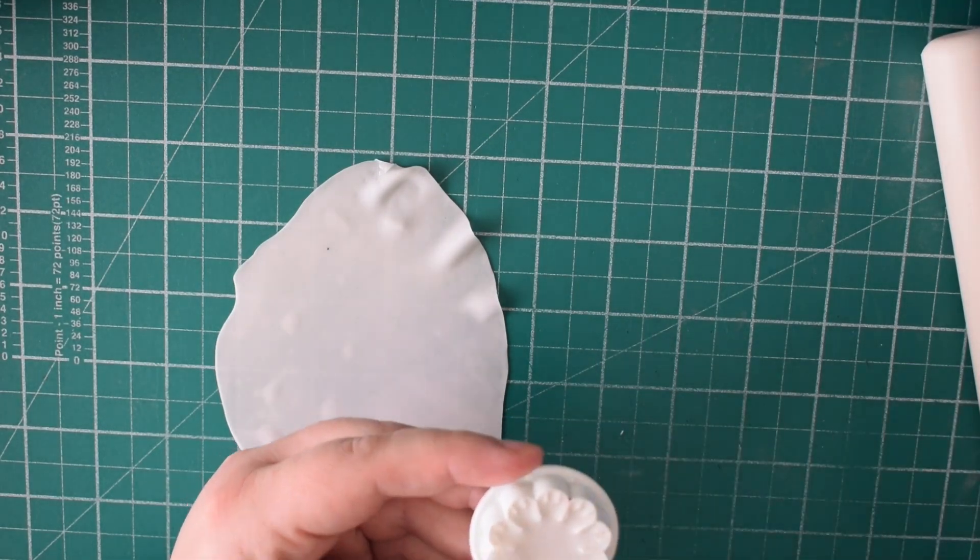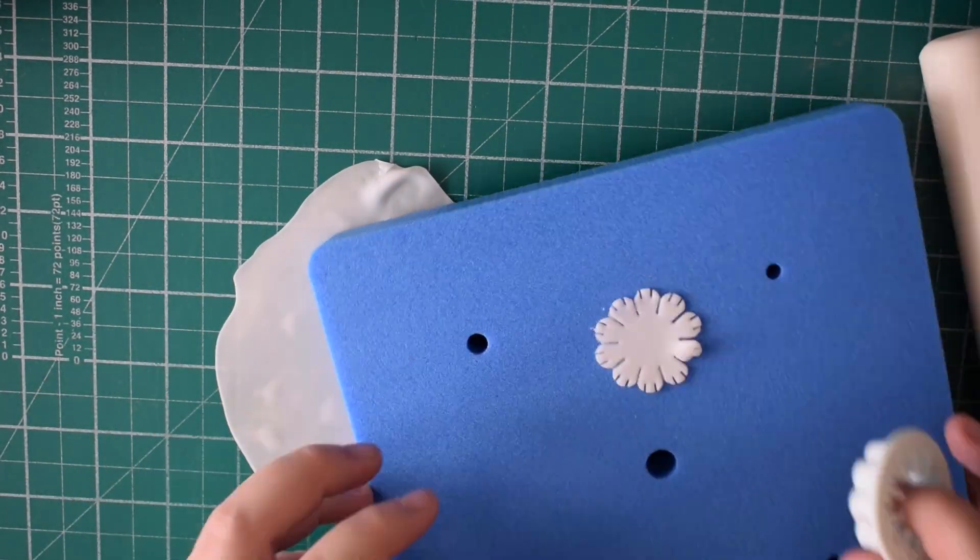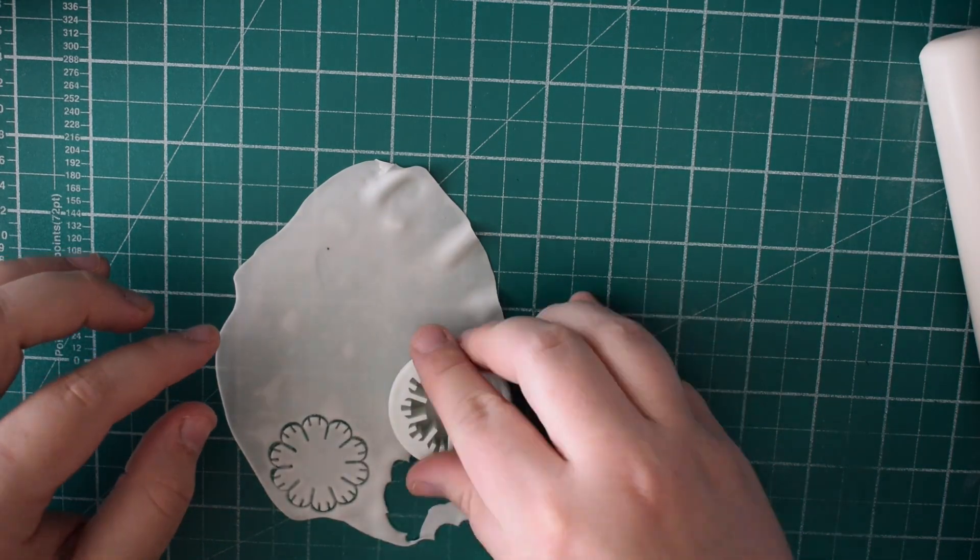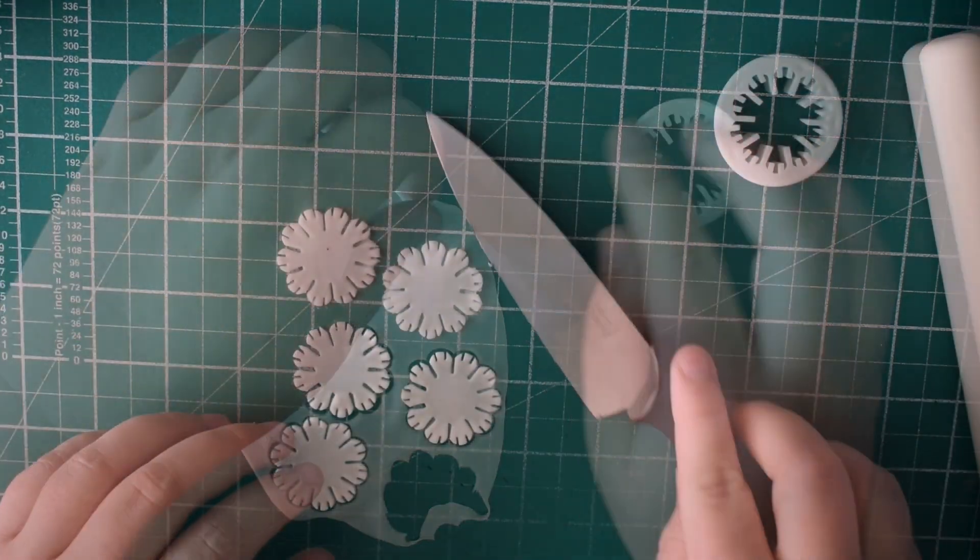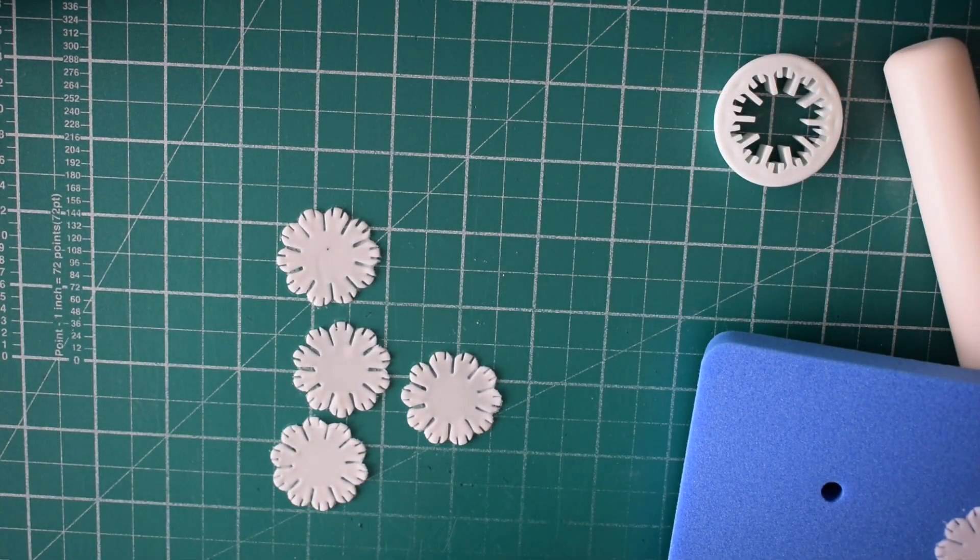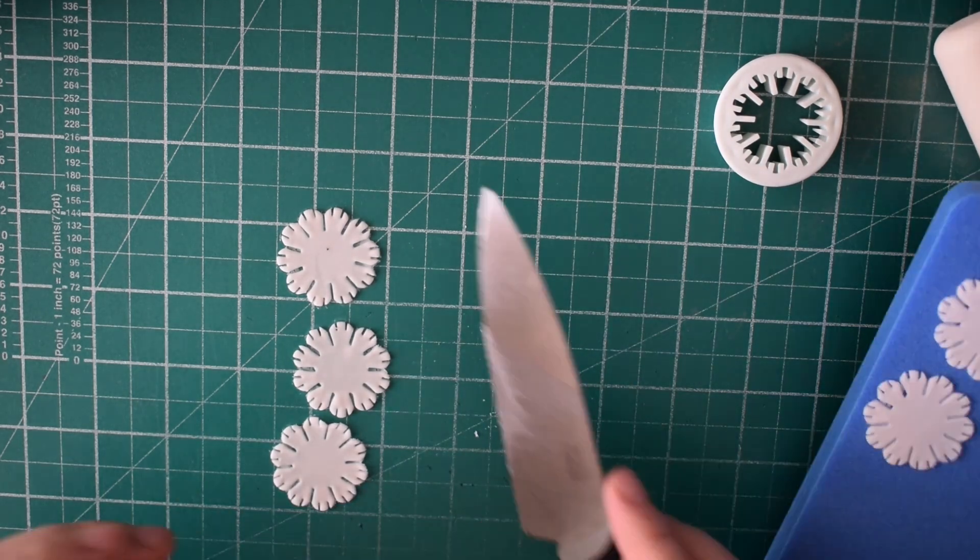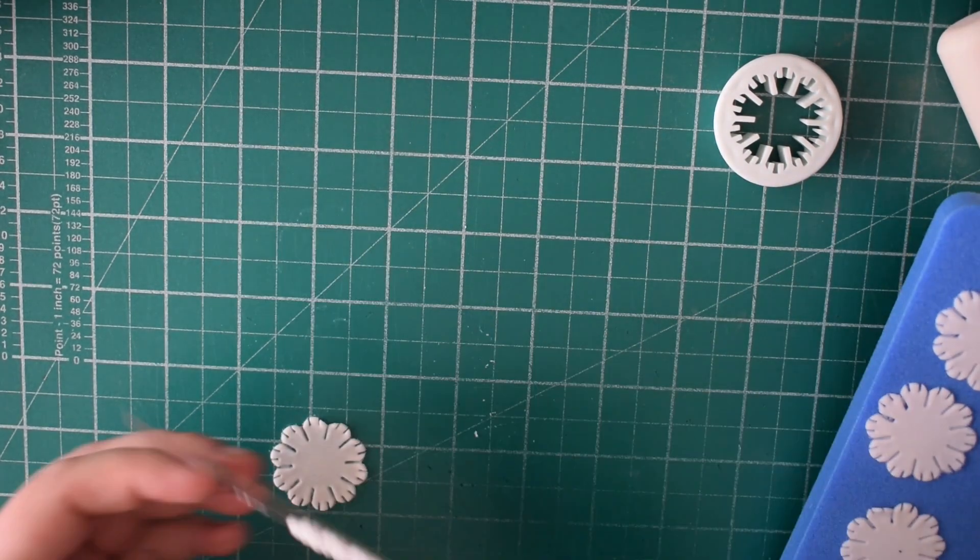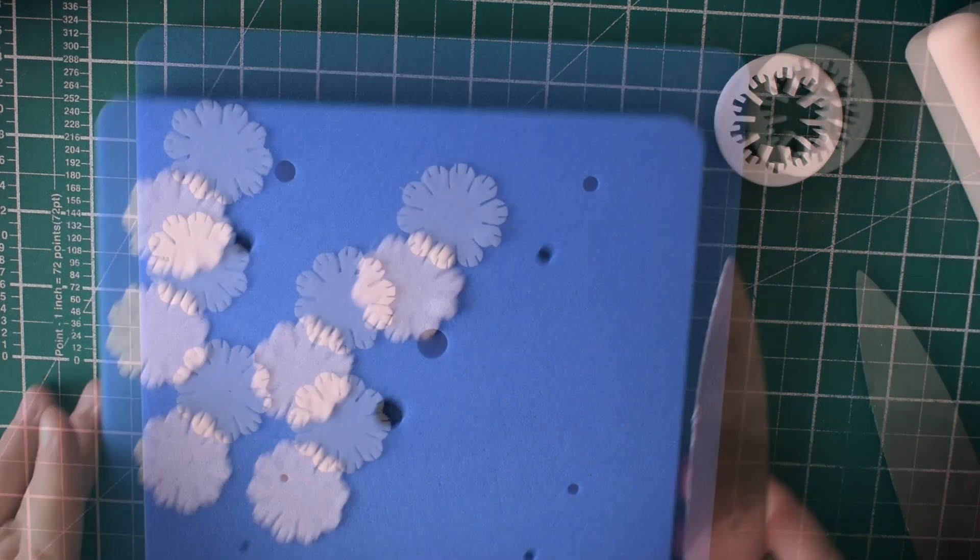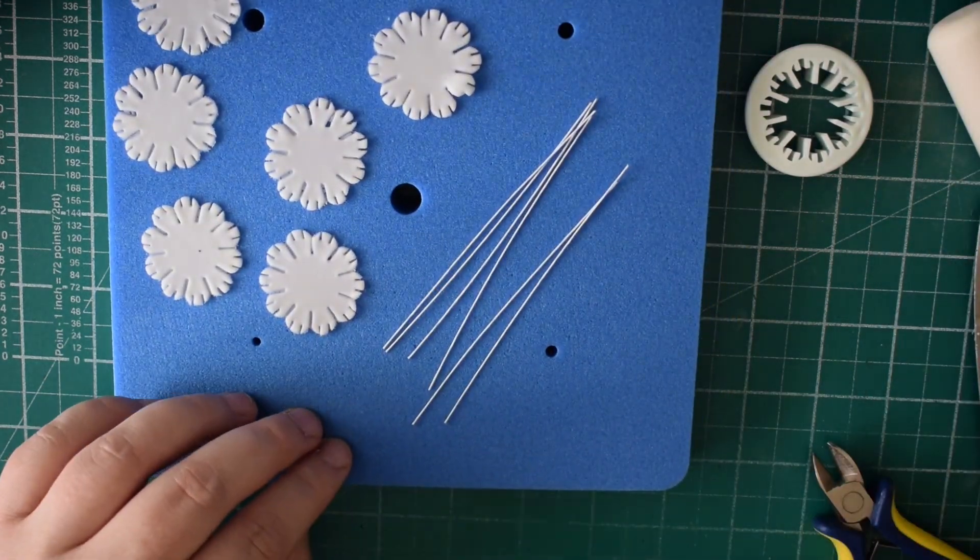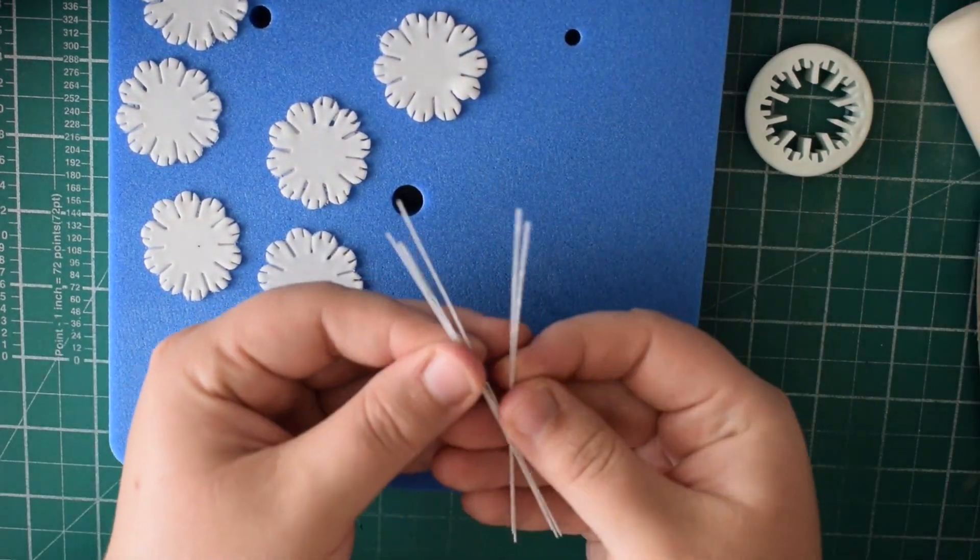I've got a chrysanthemum cutter and we're just going to cut out some of those flowers. Now they're quite big bunches really when you see them fully. So I've done I think about six or seven. Try to make sure that you do odd numbers where you can.